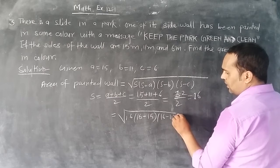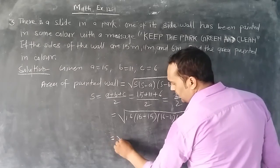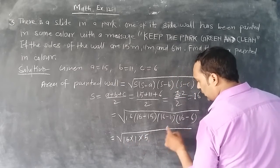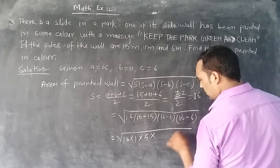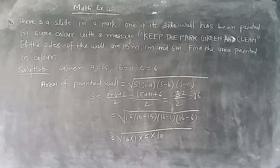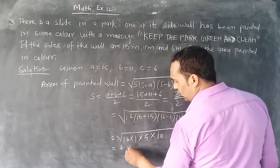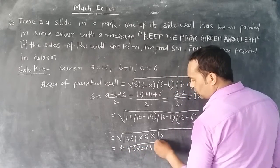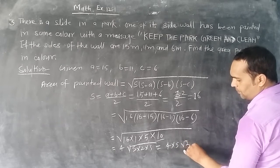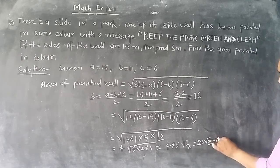So we get √[16(16-15)(16-11)(16-6)] equals √(16×1×5×10). This equals √(16×1×5×10). Taking out common factors: 4 comes out, giving us 4×√(5×2×5), which equals 4×5×√2. So the area is 20√2 square meters.